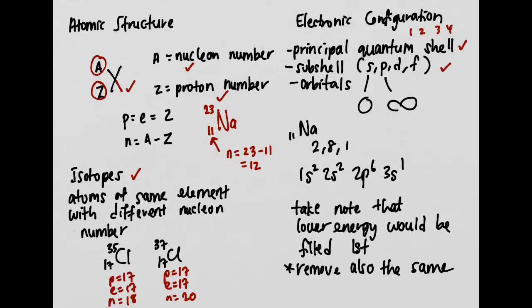The lowest number indicates the shell is closer to the nucleus; the highest number means further away. Each subshell has its own shape — S subshells have a spherical shape, and P subshells have a dumbbell shape. For the number of orbitals: S has one orbital, P has three orbitals, D has five orbitals, and F has seven orbitals. Each orbital accommodates a maximum of two electrons, so P holds 6, D holds 10, and F holds 14 electrons.